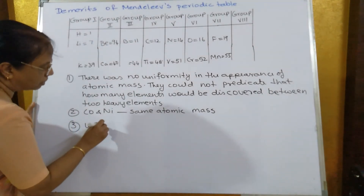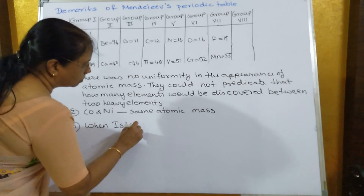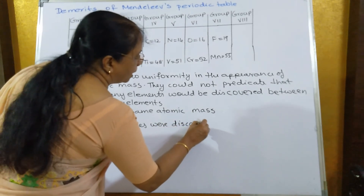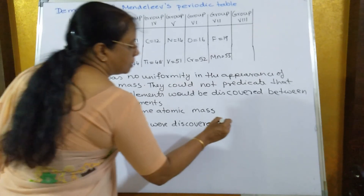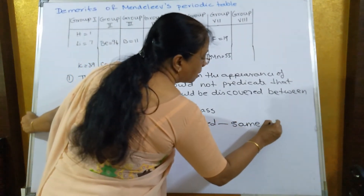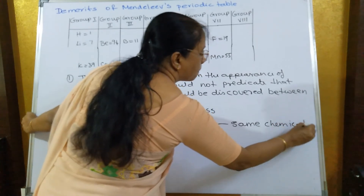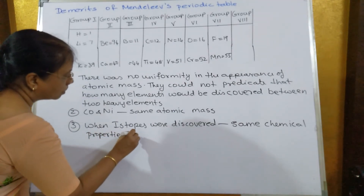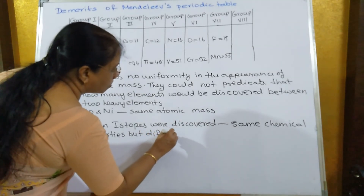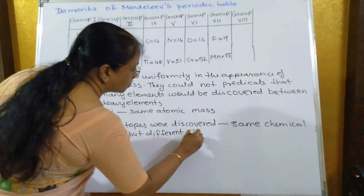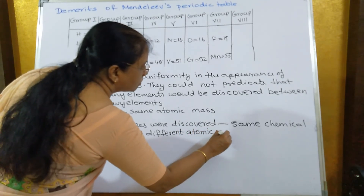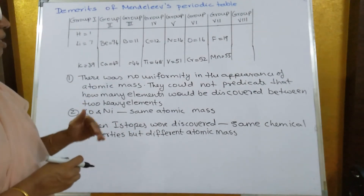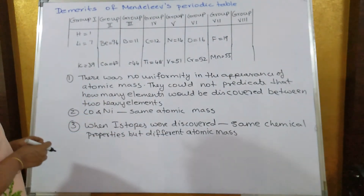The third demerit arose when isotopes were discovered. Isotopes have the same chemical properties but different atomic masses. Since they had the same chemical properties they should be placed in the same box, but since they had different atomic masses they should be placed in different boxes. This confusion was a limitation of Mendeleev's table.